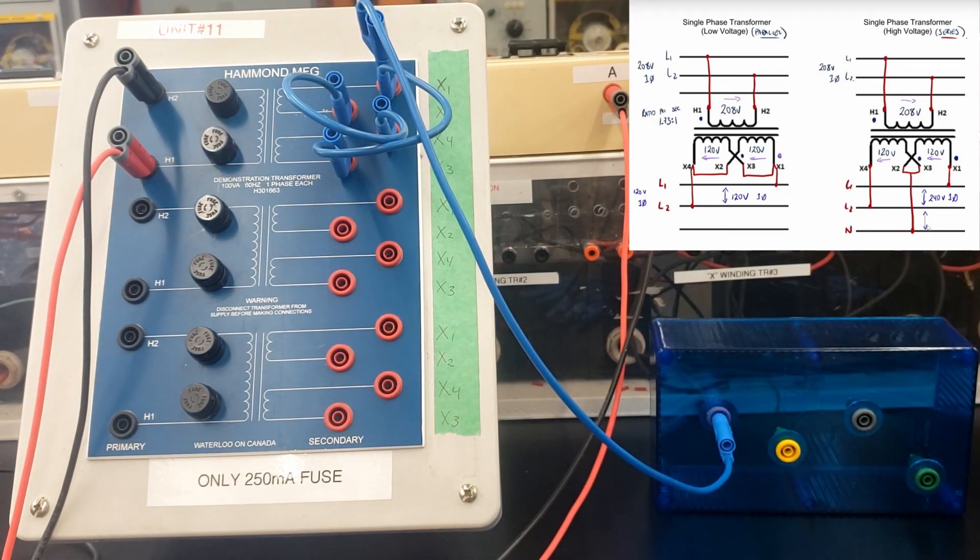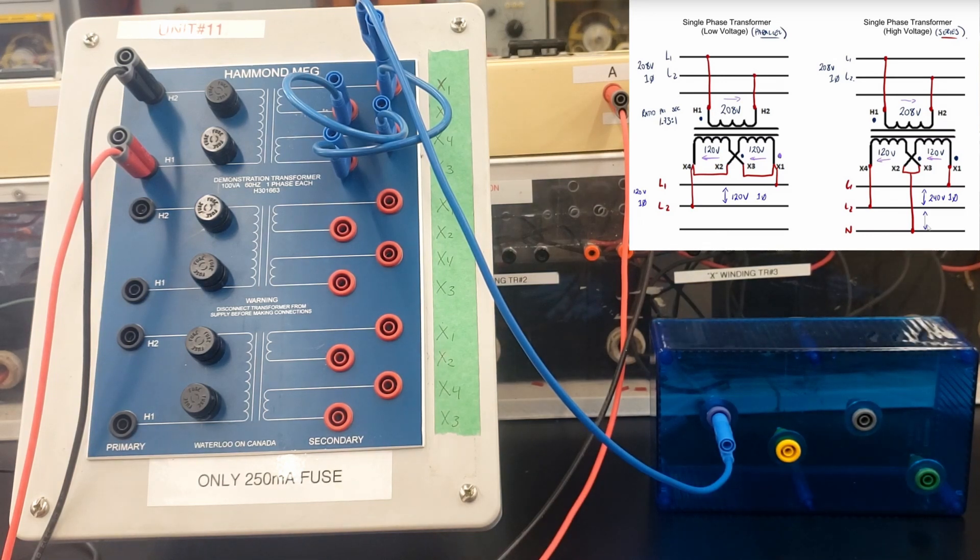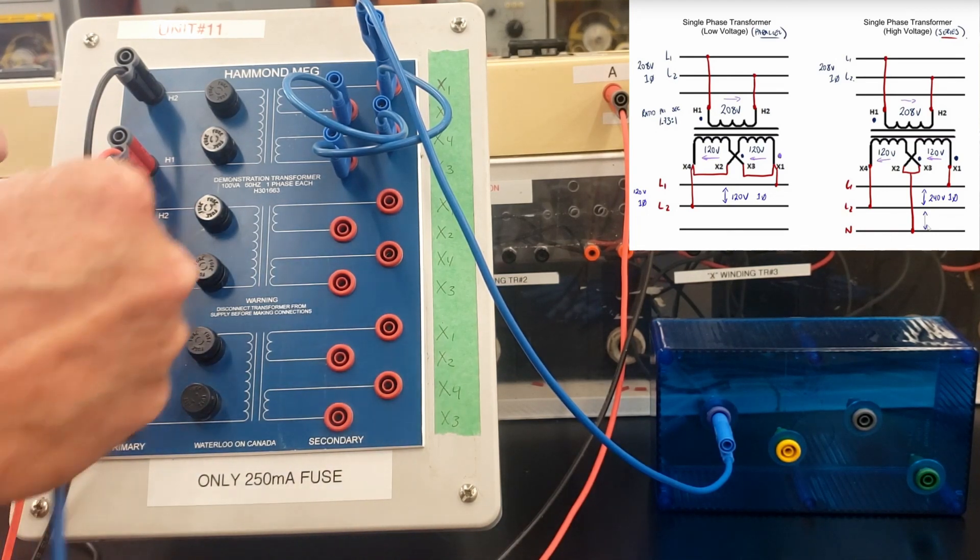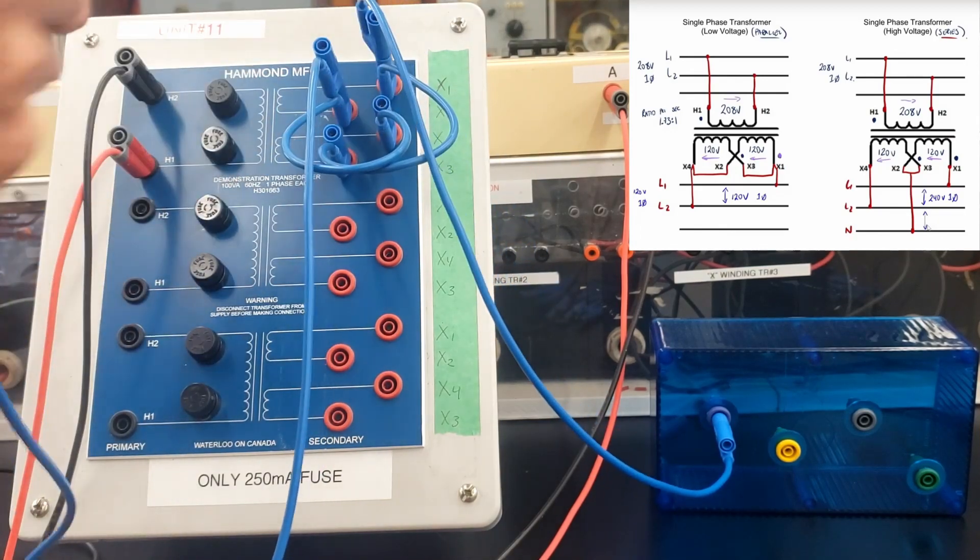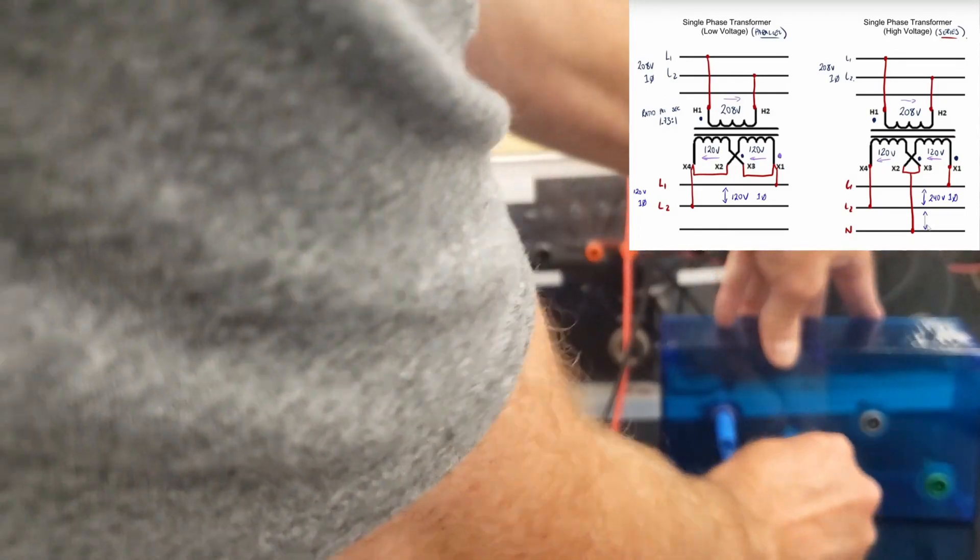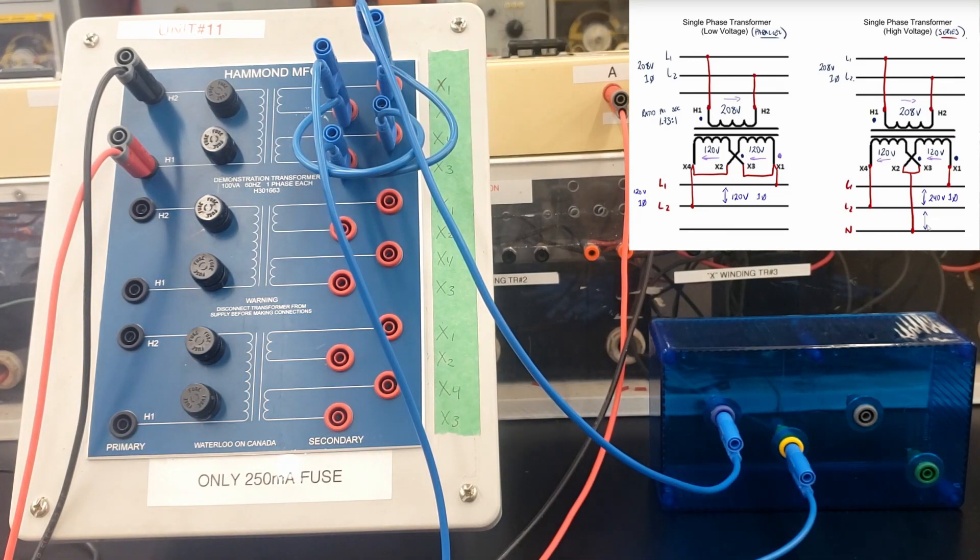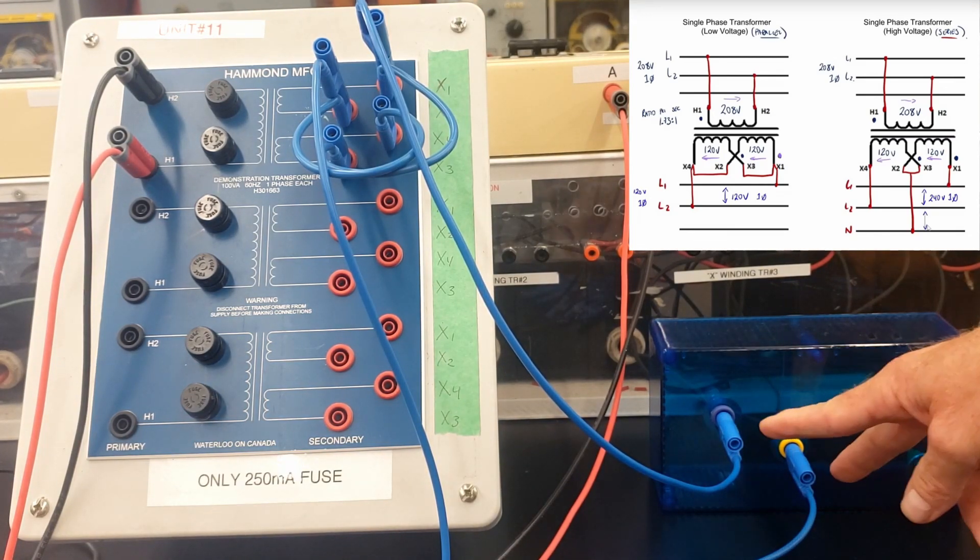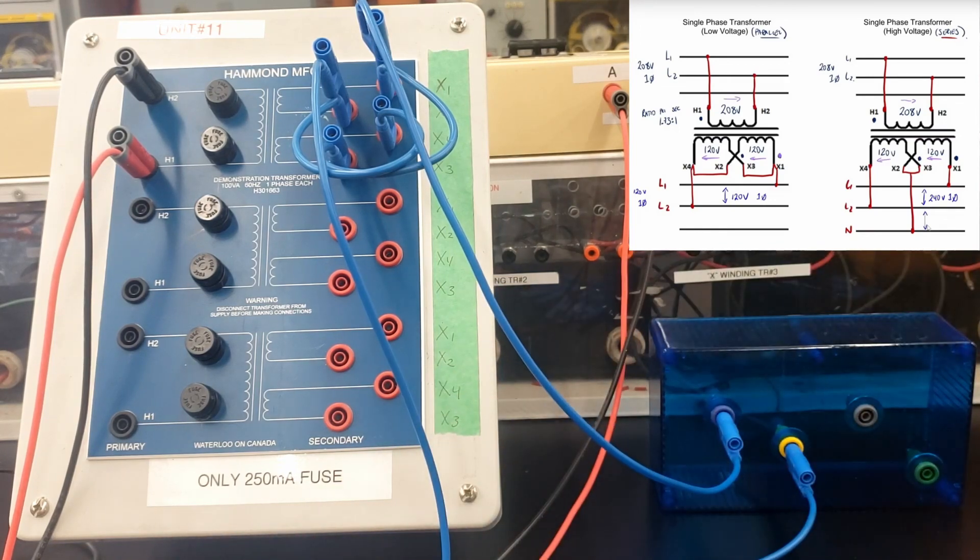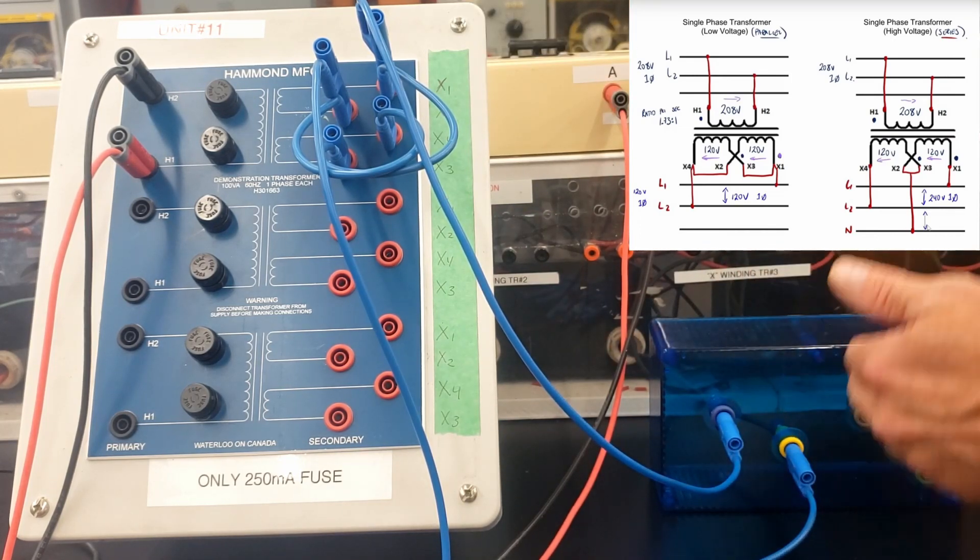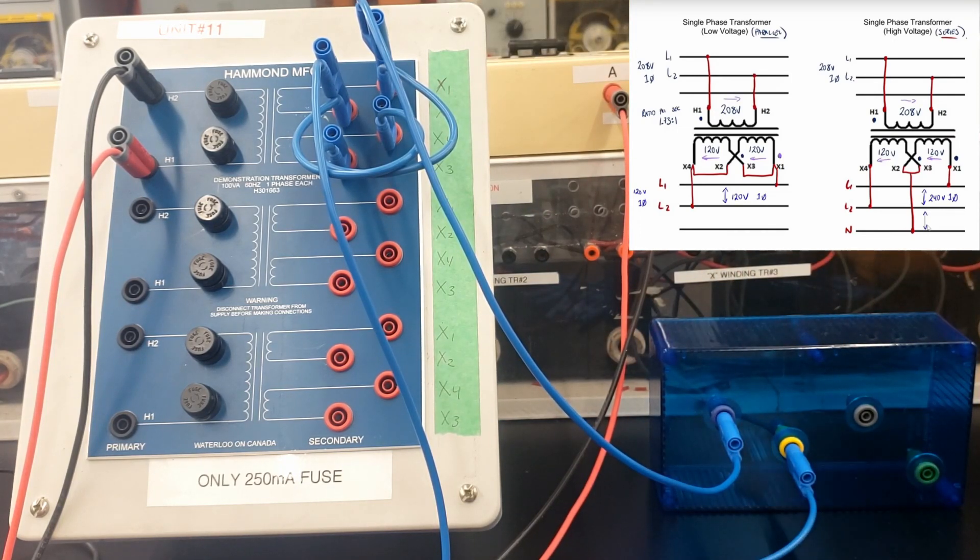I'm going to bring X1 down to one of these terminals right here. X2 and X4 are parallel together. So, I could grab X2 or X4 for my other terminals. I'm going to grab X2. I find it easier to take a look at the voltages just by using these terminals. And when we get into the three-phase, you'll see why.